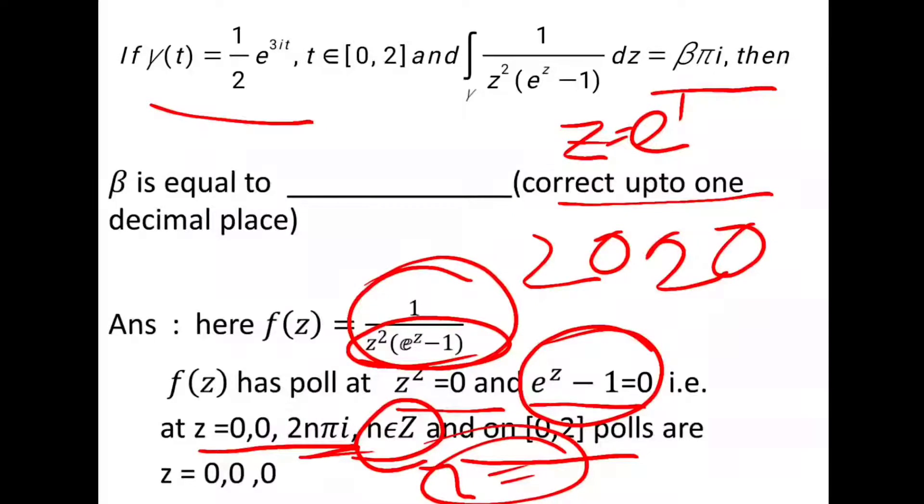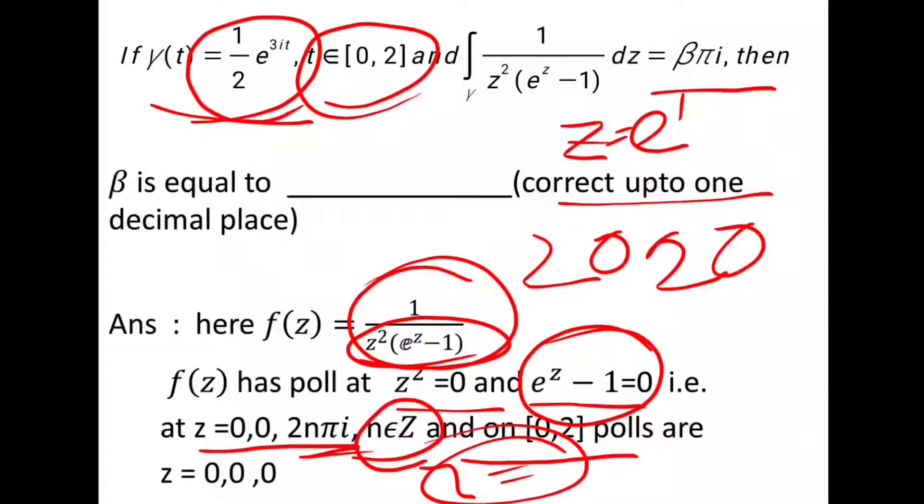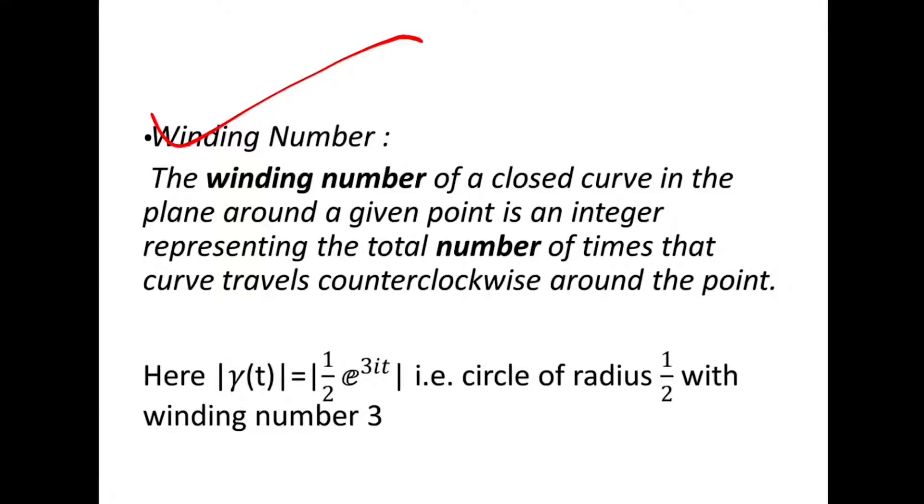Here comes the concept of winding number. When the value of the curve is e^(2it), e^(3it), etc., of type e^(nit), then we say that the winding number is equal to n. The winding number of a closed curve in a plane at a given point is an integer representing the total number of times that the curve travels counterclockwise around the point.